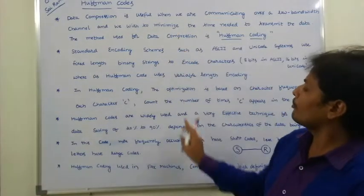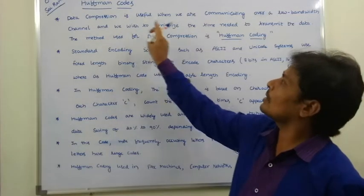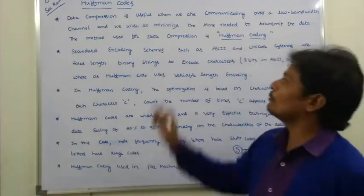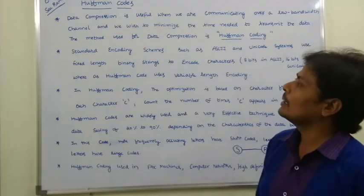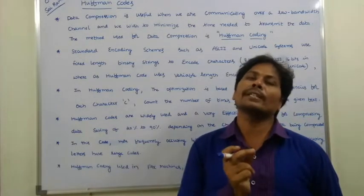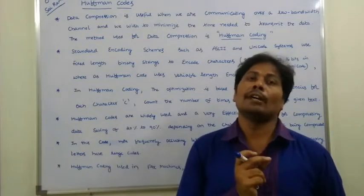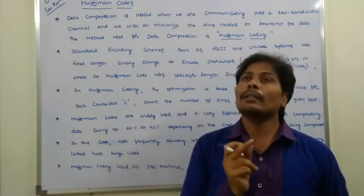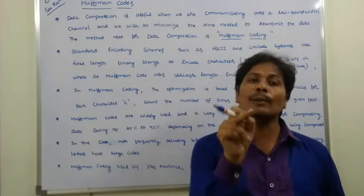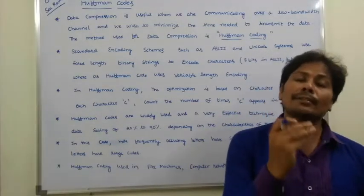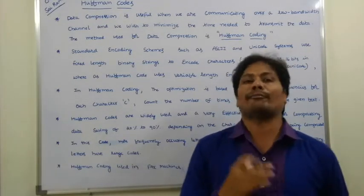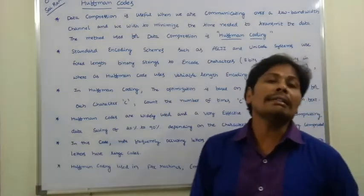Data compression is useful when communicating over a low bandwidth channel and we need to minimize the time needed to transmit the data. The method used for data compression is Huffman coding. In this scenario, a sender sends a message through a low bandwidth channel, and we want to transmit the data within minimum time — for that purpose we use Huffman coding.